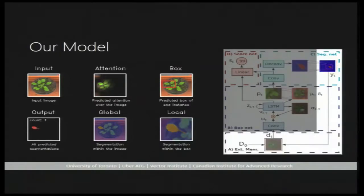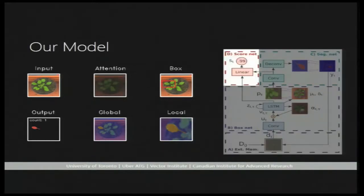The output segmentation is now sent back to the external memory, which will be the input for the next iteration. To estimate the count, we have a scoring network which outputs a score between 0 and 1, which also helps terminate the network.